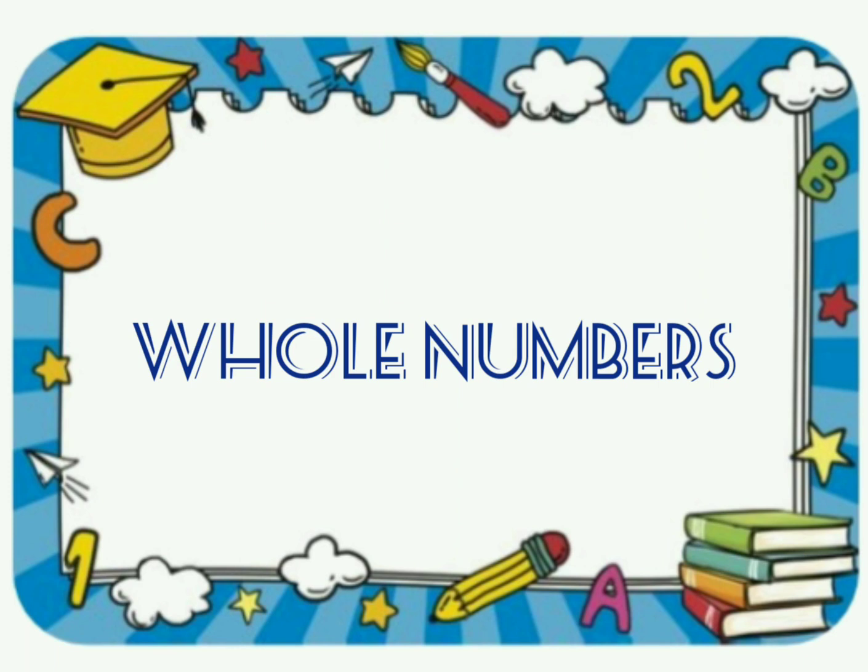As we know, we use 1, 2, 3, 4 when we begin to count. They come naturally when we start counting. Hence, mathematicians call the counting numbers natural numbers.